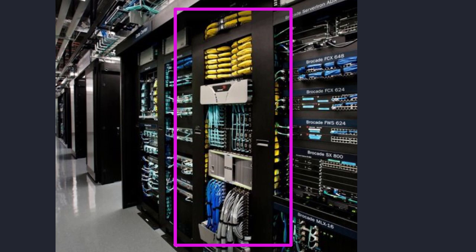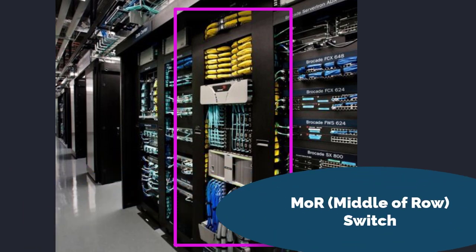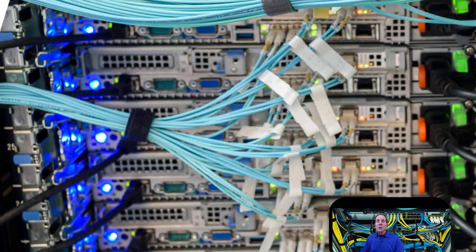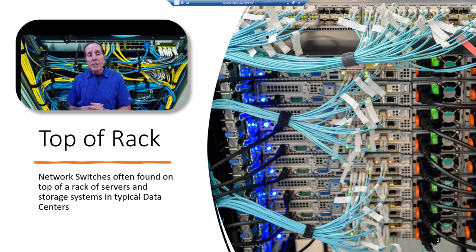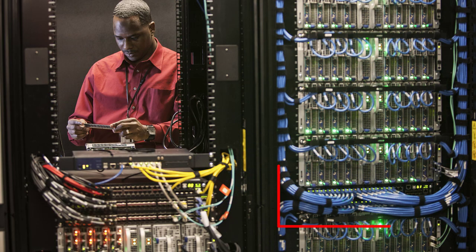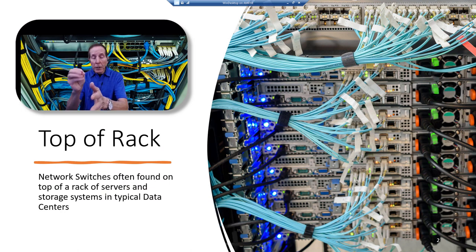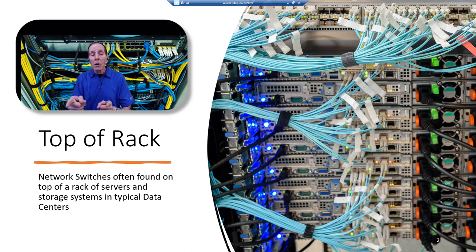Another option is middle of the row — MOR — where instead of putting all the switches at the end of the row of racks, you move those switches to the middle, reducing the distance by half. Servers on both sides simply come to the middle of the row and connect to the switches. Now, what if a network engineer decides to put the switch in the middle or even at the bottom of the rack? Nine times out of ten, no matter where it's placed in the rack, he's still going to call it a TOR switch.